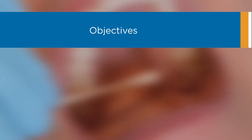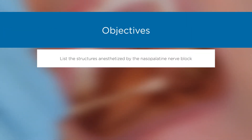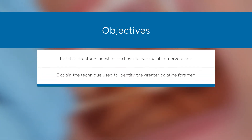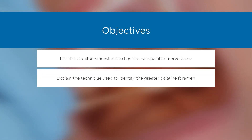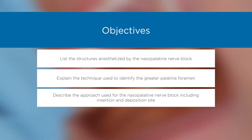Objectives: List the structures anesthetized by the nasopalatine nerve block. Explain the technique used to identify the greater palatine foramen. Describe the approach used for the nasopalatine nerve block, including insertion and deposition site.